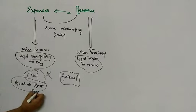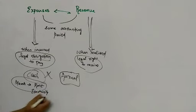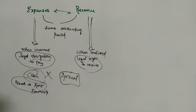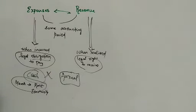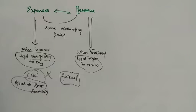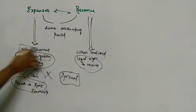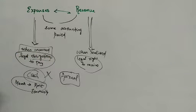Similarly, electricity is an expense. March uses electricity, so March's electricity expense is incurred in March. Even if the electricity bill is not paid until later, the expense belongs to March. So when expenses are incurred, we record them — regardless of when cash is paid. The benefit has been received.